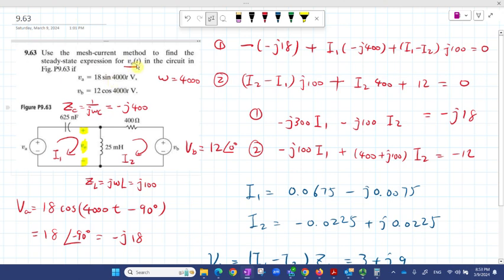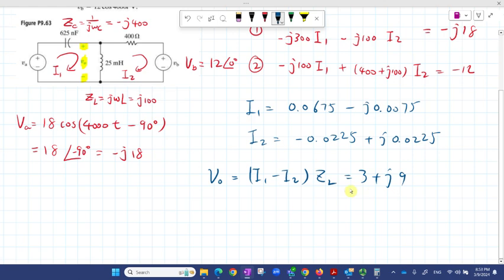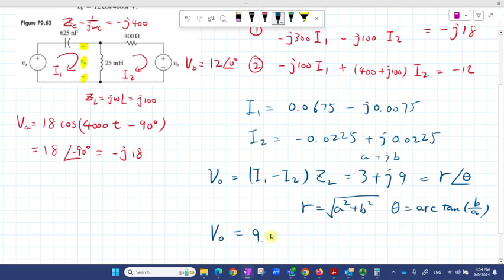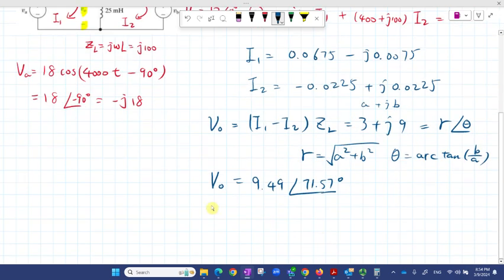This V0(t) is a time domain expression, but now we have the frequency domain, so we want it to be in r∠θ form. The magnitude r equals √(3² + 9²), and θ = arctan(9/3). If you do that, we get √90 ∠71.57 degrees.